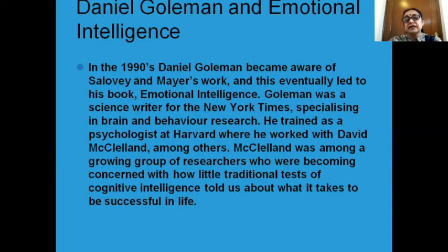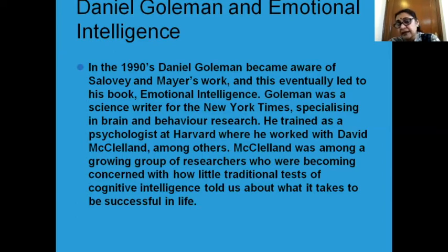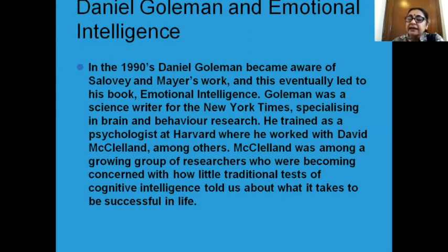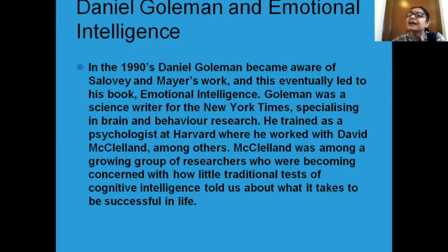McLeland was becoming concerned about how traditional tests of cognitive intelligence were failing to tell us how to be successful in our lives. Even with an excellent IQ and brilliant academic performance, there could still be a reason you don't succeed. McLeland believed we were missing something, and Daniel Goleman identified it: it is the emotional aspect. People with high emotional sensitivity who relate better to others are the ones who actually make it big and are happy in life.